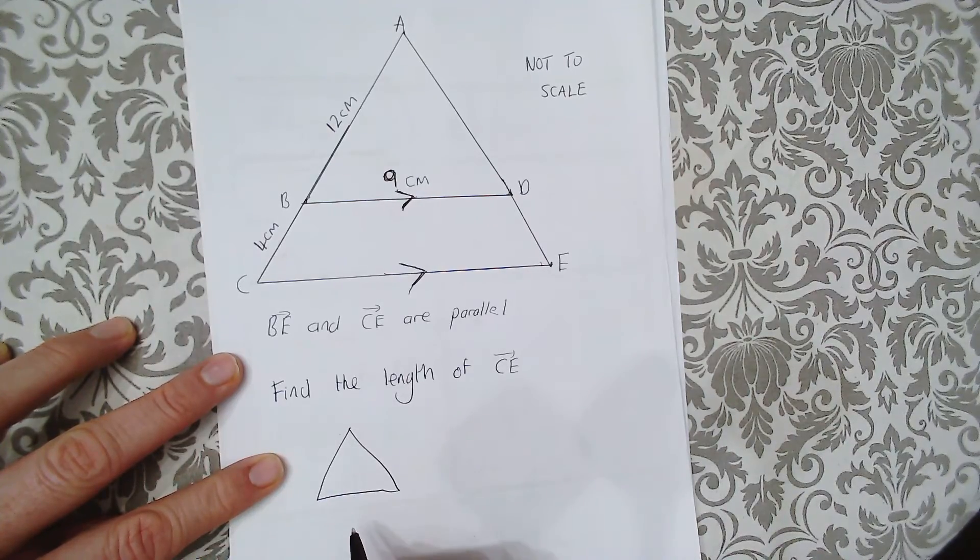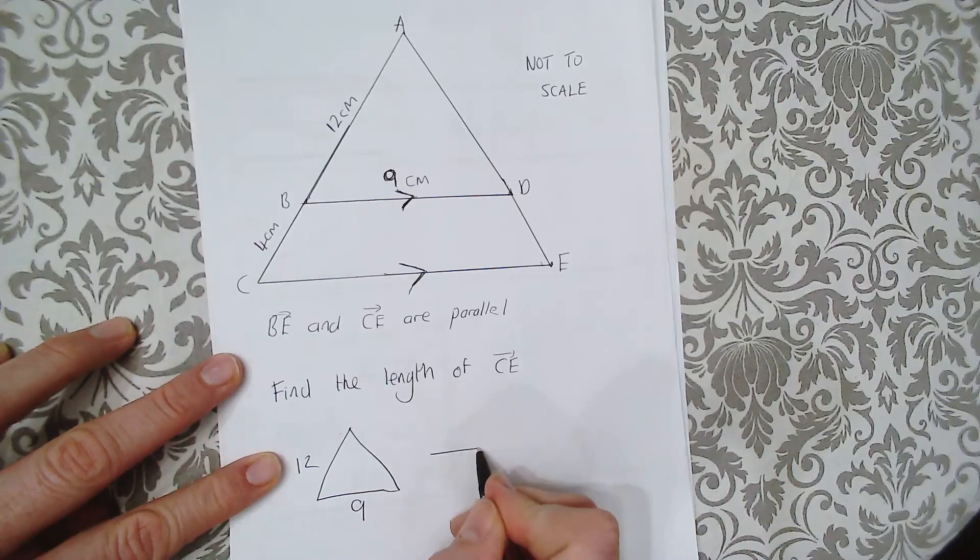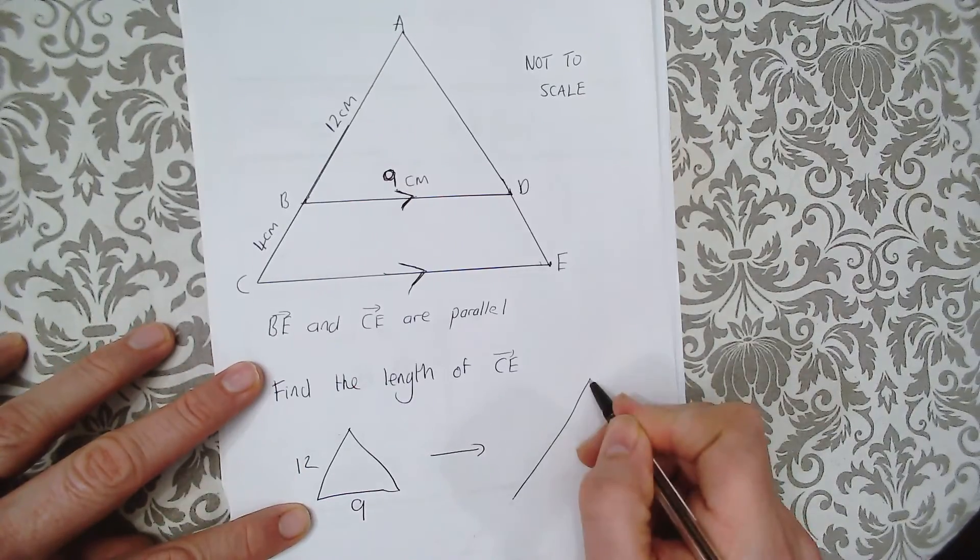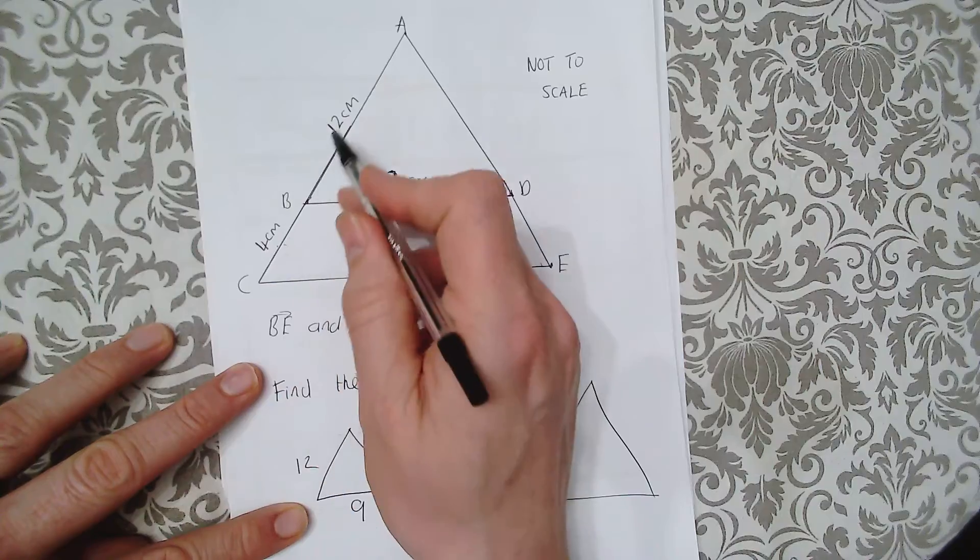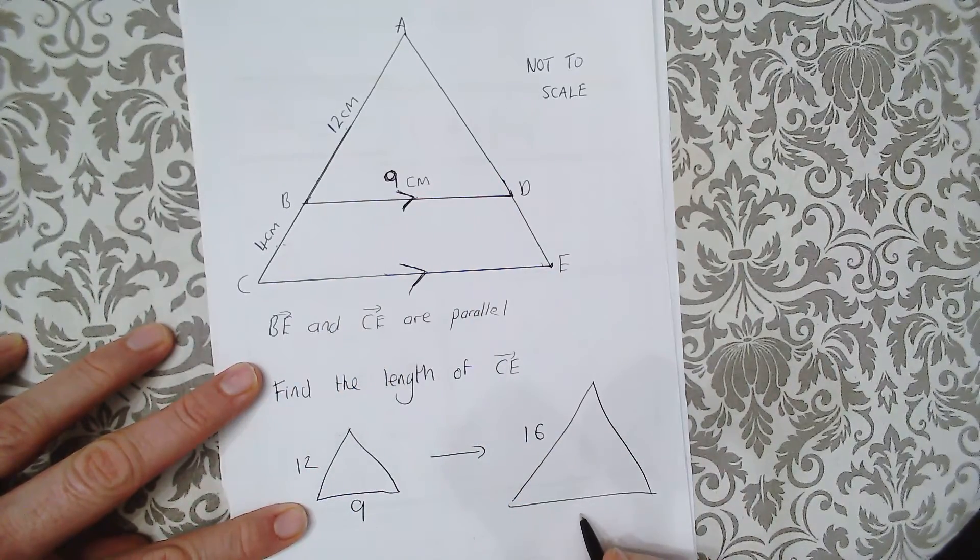So the small one is 12 and 9, and it is enlarged to a bigger one which is 4 plus 12 equals 16, and here we have an unknown length. Let's just call it X for now.